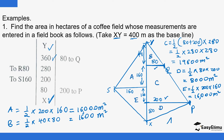To get the total area, you add all these areas together: 16,000 plus 1,600 plus 19,600 plus 8,000 plus 16,000, giving a total area of 61,200 square meters.